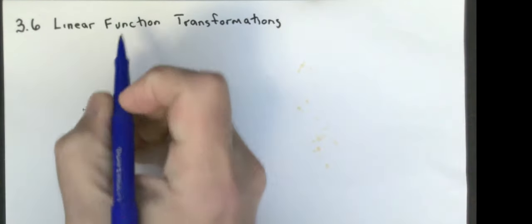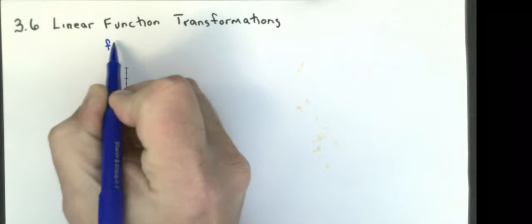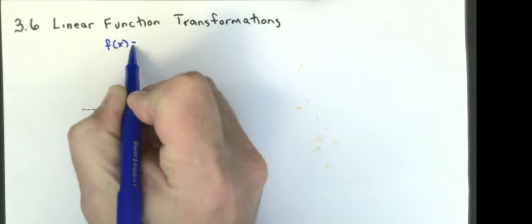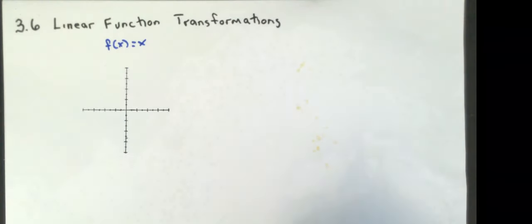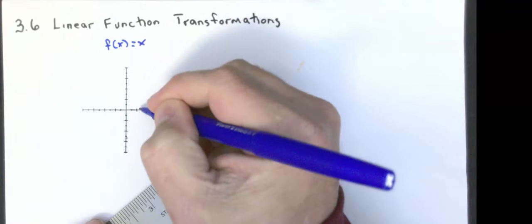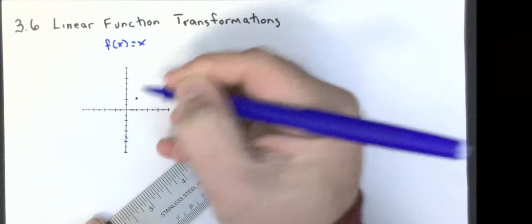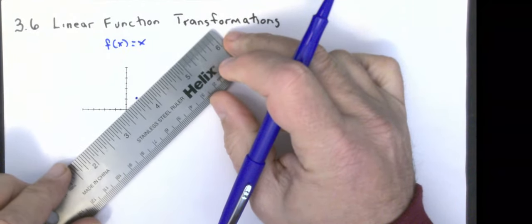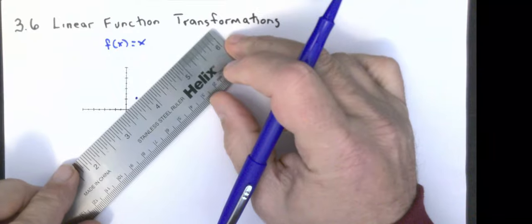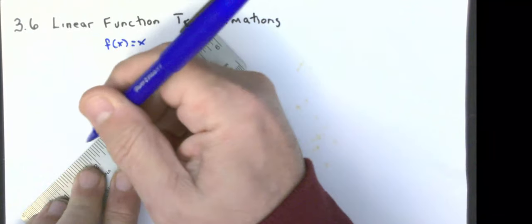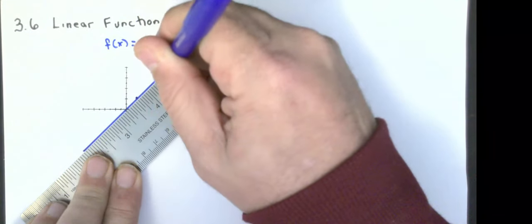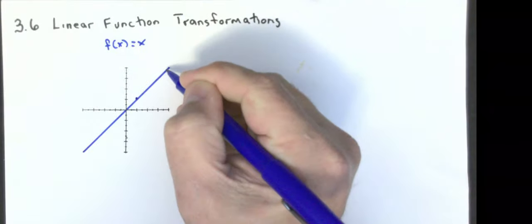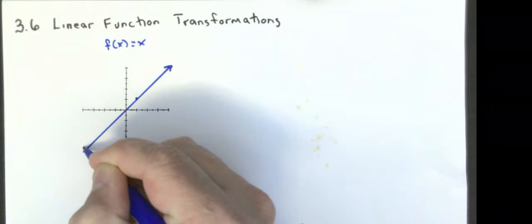Our basic linear function is f(x) = x, and that is our memorized graph, where basically it's got a slope of one, and it intercepts the y-axis at the origin.